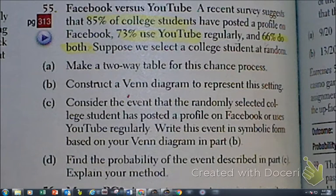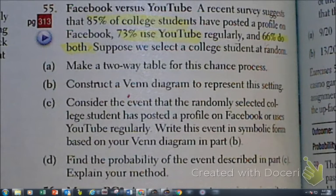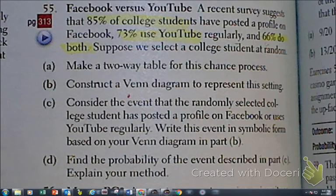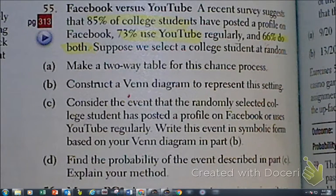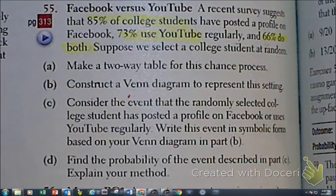Now please notice what's happening here. We have Facebook versus YouTube, a survey. 85% of the students post a profile on Facebook, 73% use YouTube regularly, and 66% use both. So they want a two-way table and they want a Venn diagram, and then we'll see if we're going to do C and D depending on time. So let's go.